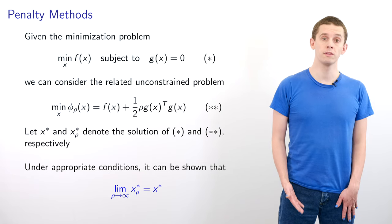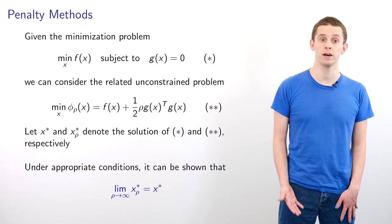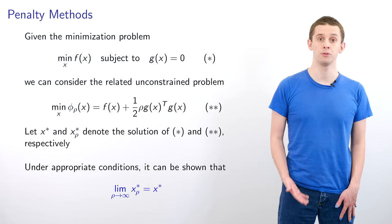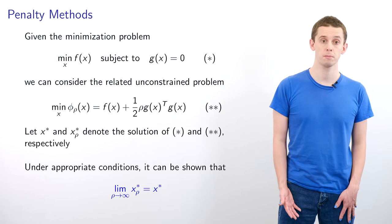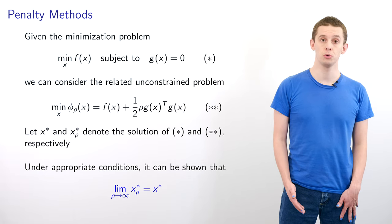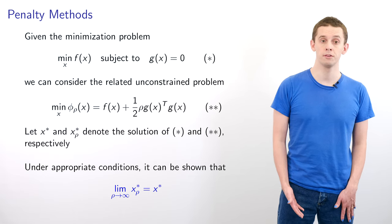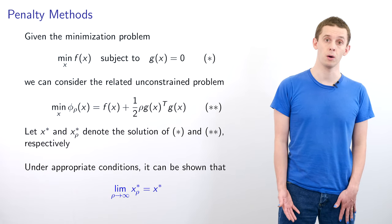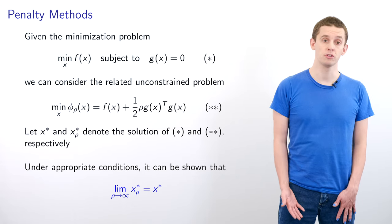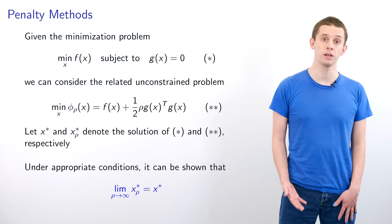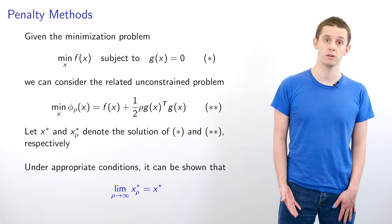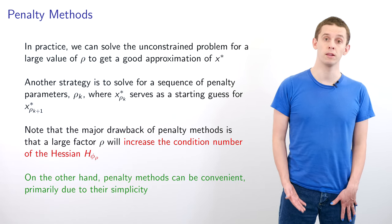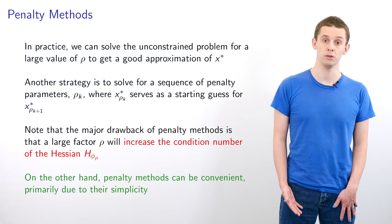We consider the related unconstrained problem where we want to minimize phi_rho of x, which equals f of x plus one-half rho times g^T of x times g of x. Let x* be the solution to our constrained problem with parameter rho. Then under appropriate conditions it can be shown that the limit as rho goes to infinity of x*_rho will equal x*. In practice we can solve the unconstrained problem for a large value of rho to get a good approximation of x*.